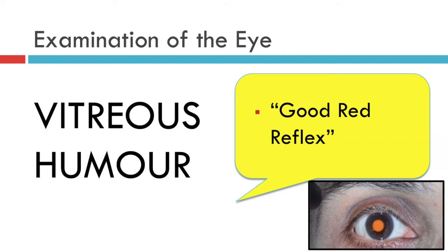That completes the examination of the lens and the vitreous humor for non-specialists, and it only remains for us to address the visualization of the optic nerve and retina. This is the first time in the whole history and examination of an eye patient where you actually need to use your ophthalmoscope for the purposes for which it is intended, namely to visualize the retina. And that's the subject of the next and final video.